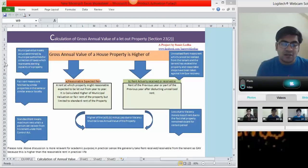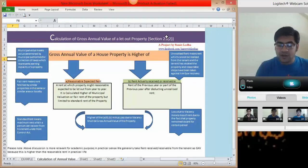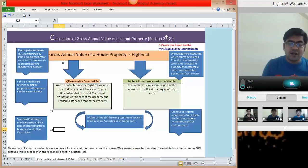So let us say municipal valuation is 10 rupees. If fair rent is 15 rupees, and standard rent is 12 rupees. In that case, you have to take higher of these two terms that is municipal valuation or fair rent, whichever is higher is 15 rupees.